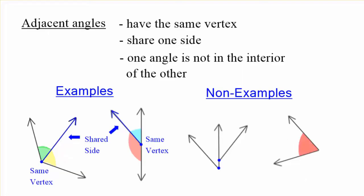Well, they are going to share the same vertex, but one of them is inside the other one. They overlap. Well, that's a common mistake that people have whenever they are trying to figure out if two angles are adjacent.